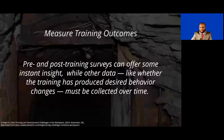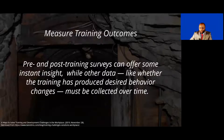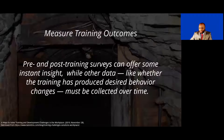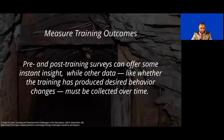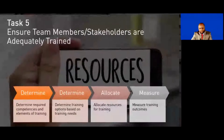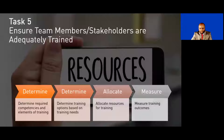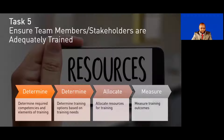Pre and post training surveys can offer some instant insight, while other data — like whether the training has produced a desired behavior change — could be collected over time. So the summary of all we've talked about here: determining required competencies, determining training options, allocating resources for training, and measuring training outcomes. That concludes Task Five. Next, we'll be moving on to Task Six.